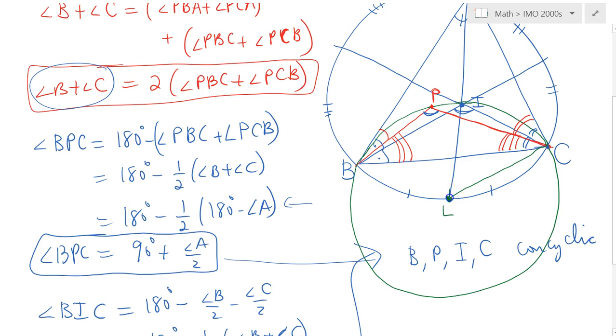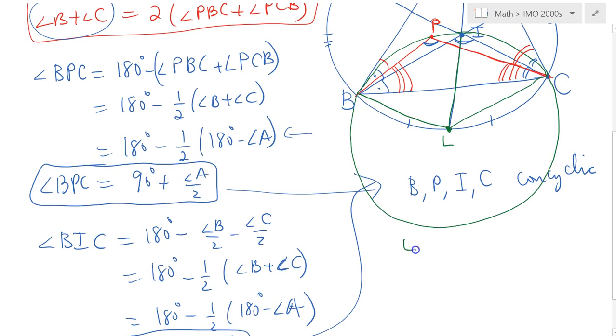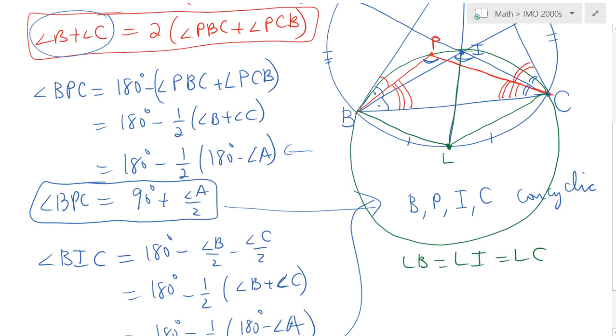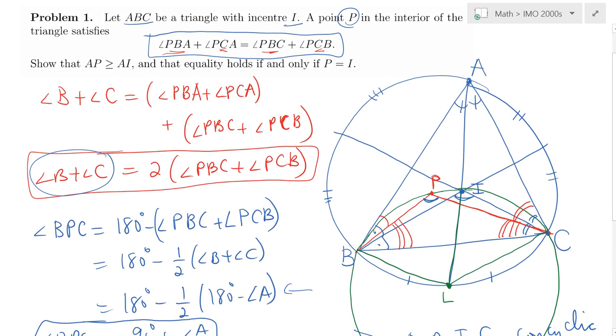This circle has some very nice properties, including the fact that obviously these lengths, LB is equal to LP is equal to LI which is equal to LC. As a result, it's obvious that it is also the circumcircle of triangle BIC, but what's interesting is P is on that circle as well.